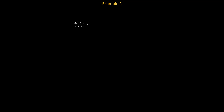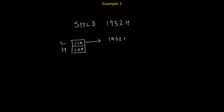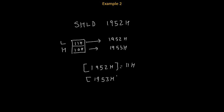Let's take one more example. Suppose the instruction is SHLD 1952H. Before execution, suppose the value of L is 11H and the value of H is 10H. The content of L will get copied to the given address 1952H, and the content of H will get copied to the next address 1953H. Therefore, after execution, the content of 1952H will become 11H and the content of 1953H will become 10H.